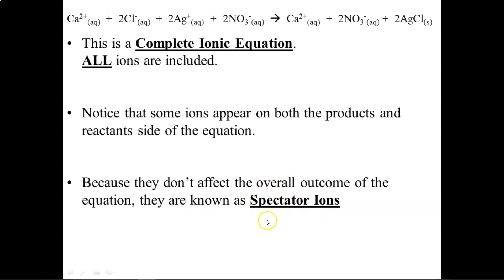Because they don't affect the overall outcome of the equation, they are known as spectator ions. Just like spectators at a sporting event, they're not supposed to participate in the actual sport. These ions also do not participate in the chemical reaction, so we call them spectators. They just watch.